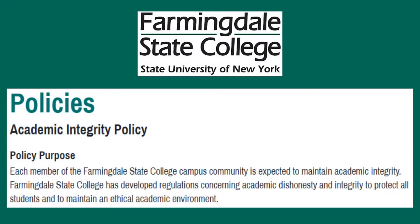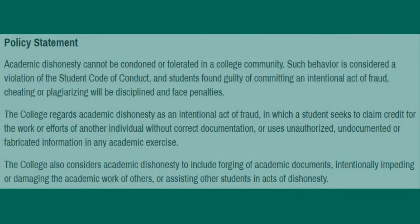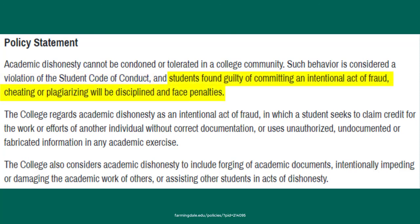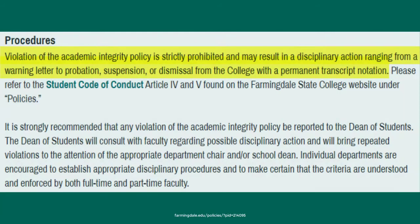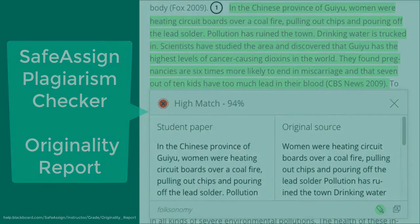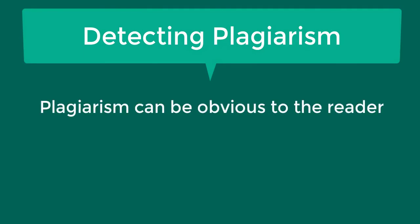Plagiarizing is a serious offense and comes with consequences. According to the college's academic integrity policy, academic dishonesty is not tolerated. It is a violation of the student code of conduct, and students found guilty of committing an intentional act of fraud, cheating, or plagiarizing will be disciplined and face penalties. Violation of this policy may result in disciplinary action ranging from a warning letter to probation, suspension, or dismissal from the college with a permanent transcript notation. It is your own responsibility not to plagiarize. Your professors might ask you to submit your work to a plagiarism checker which automatically detects if any parts of your paper are plagiarized. However, instructors may also spot plagiarism just from reading a paper.